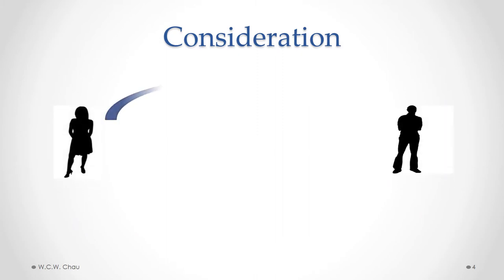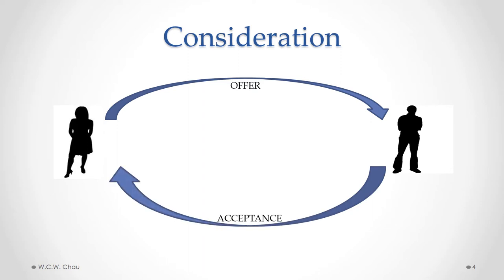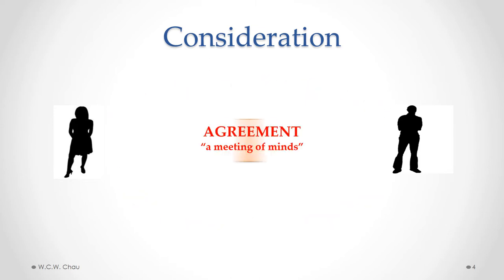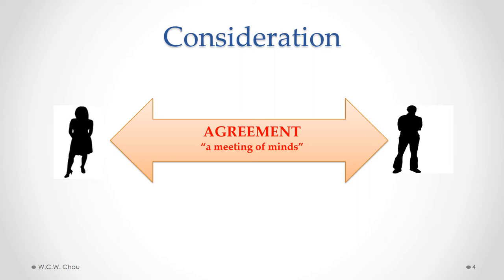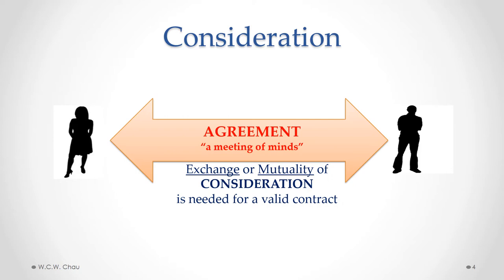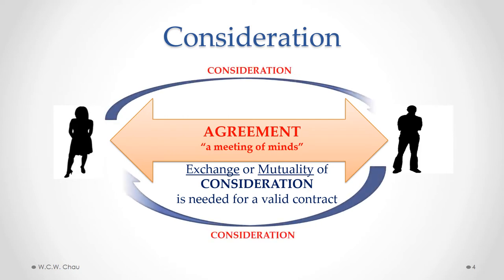We have two parties. One person makes an offer to the other, and that second person accepts the offer, provides an acceptance. What that results in is an agreement or a meeting of minds. What we also need to have a legally binding contract is an exchange or mutuality of consideration. Consideration has to flow from one party to the other and vice versa in order to have a valid contract.